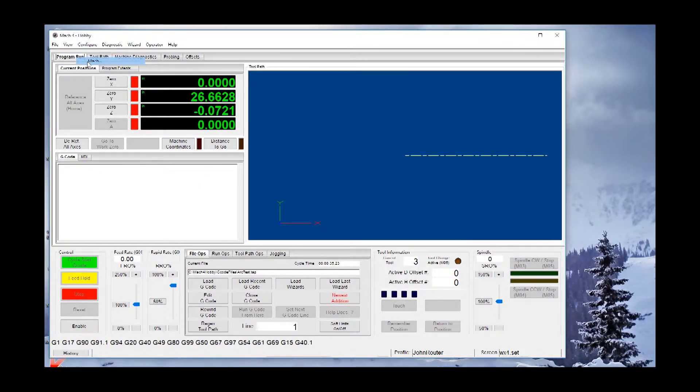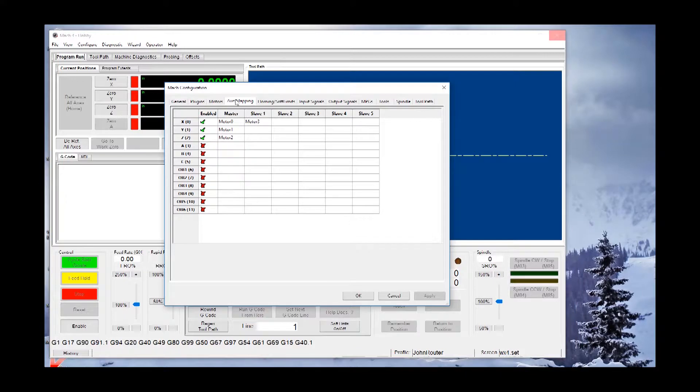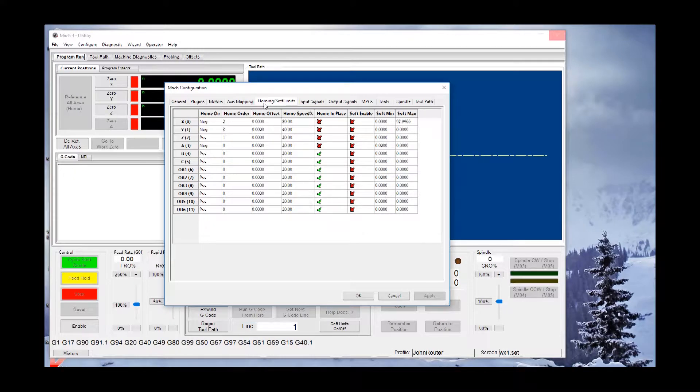Now that everything is labeled properly, you have to configure Mach for your homing switches. Here you see that motor 3 is my A, and it's slaved to motor 0, which is x. Then you just go into the homing limits setup, and you see that z goes first, and then x goes second, and y goes third. You can set this up however you want it to work for you.